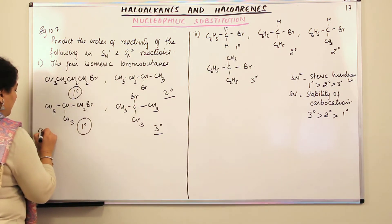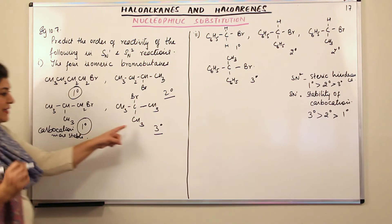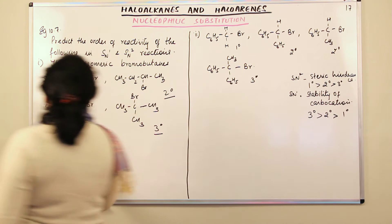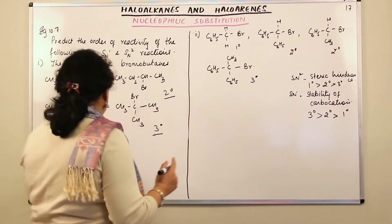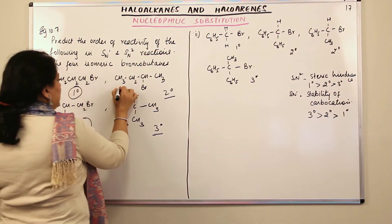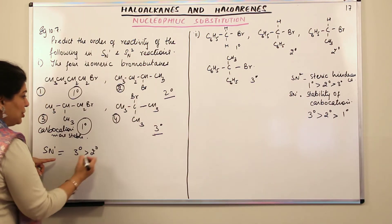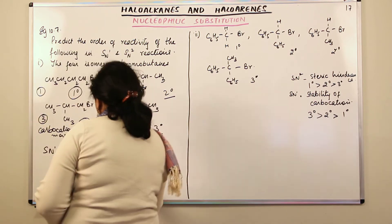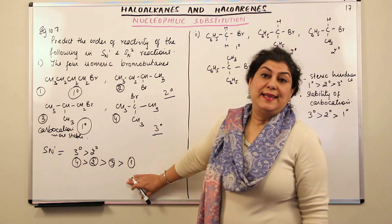Let us call these compound 1, 2, 3, and 4. The tertiary carbocation is the most stable, so for SN1, the tertiary compound 4 would be most reactive. Then the secondary compound 2, then the branched primary compound 3, and then the straight primary compound 1. So compound 1 would be the least reactive towards the SN1 mechanism.